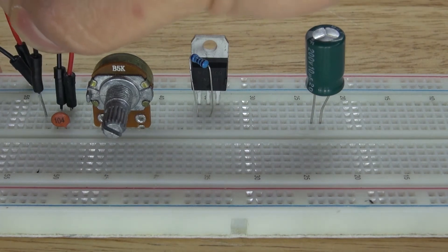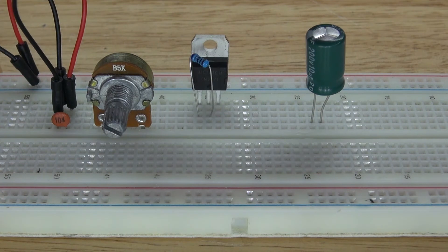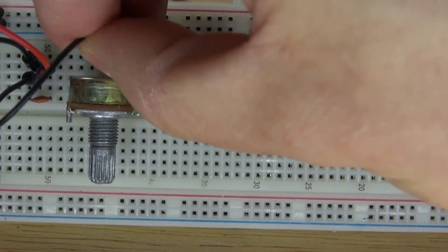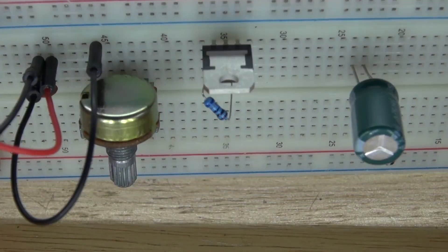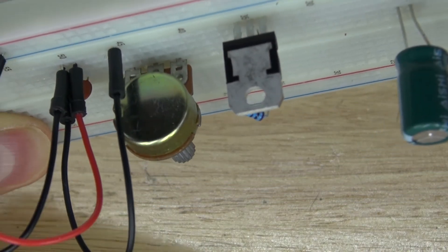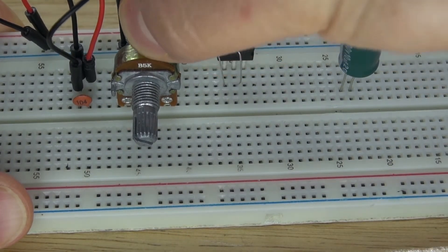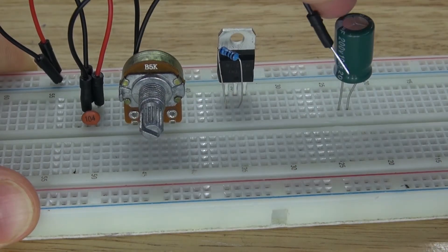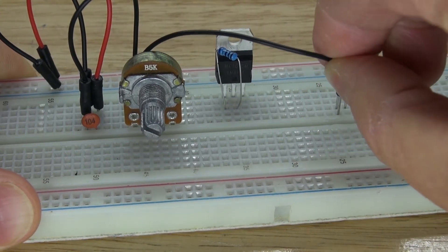Now I'm going to take another negative jumper cable and connect that to one of the pins of the potentiometer. I choose this side. And I'm going to take another negative jumper cable and connect it to the same pin of that potentiometer, and connect that to the negative of my electrolytic capacitor.